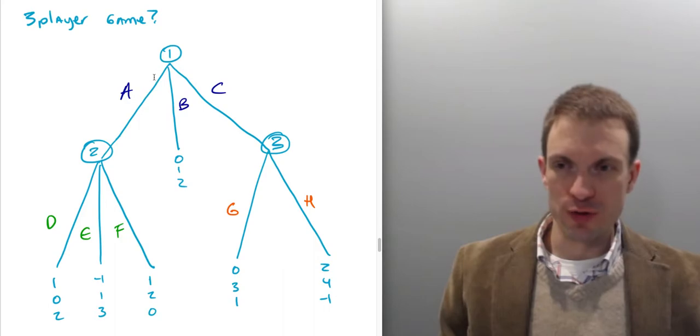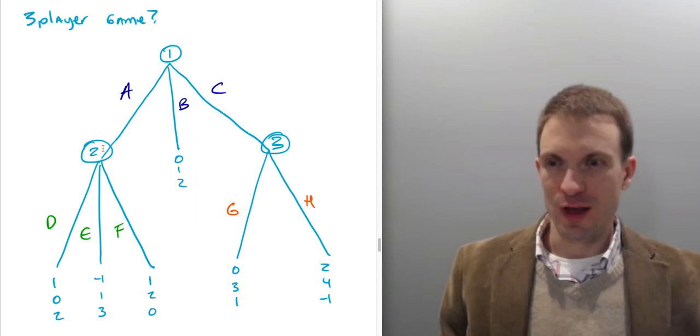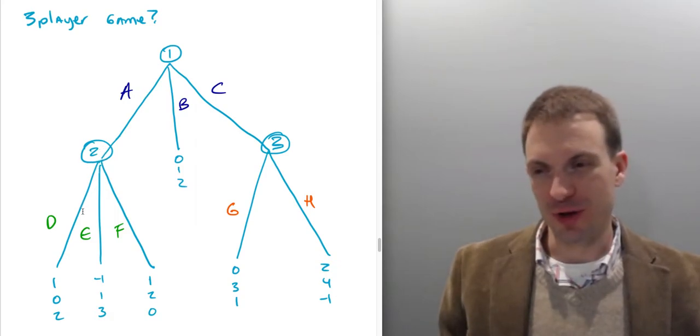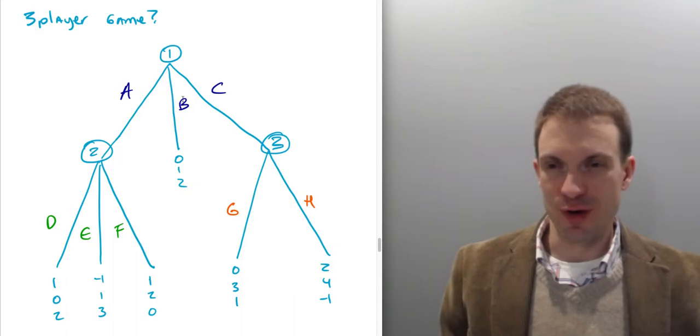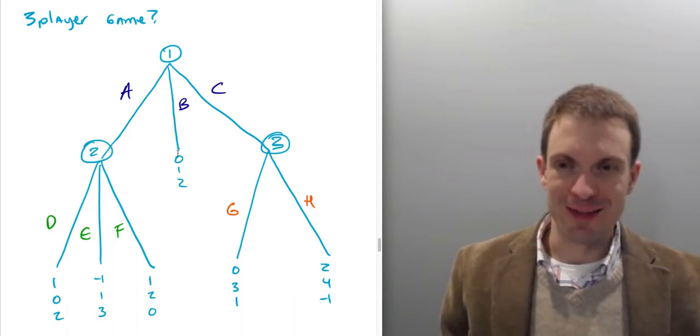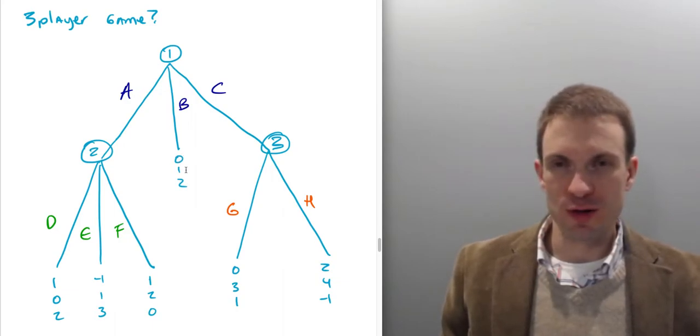So suppose we have player one who's going to select A, B, or C. Then we have player two who moves after player one selects A, but not after B or C. And if player two is called upon to play, player two can select D, E, or F. And then there's player three who's called upon to play if player one selects C. Player three can select G or H. And then we have the payoffs. And then if player one selects B, then the game ends. Payoffs are going to be the first one goes to player one, the second one goes to player two, the third one goes to player three.